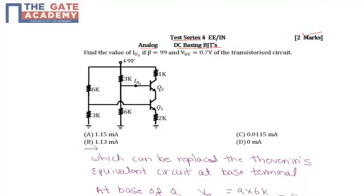This is the given circuit with transistors Q2 and Q1. Current IB2 flows through the Q2 transistor, connected in series with 3kΩ and 6kΩ resistors. Here we have 6kΩ and 3kΩ, and the emitter terminal of Q1 is connected with 2kΩ. We need to find the value of IB2.